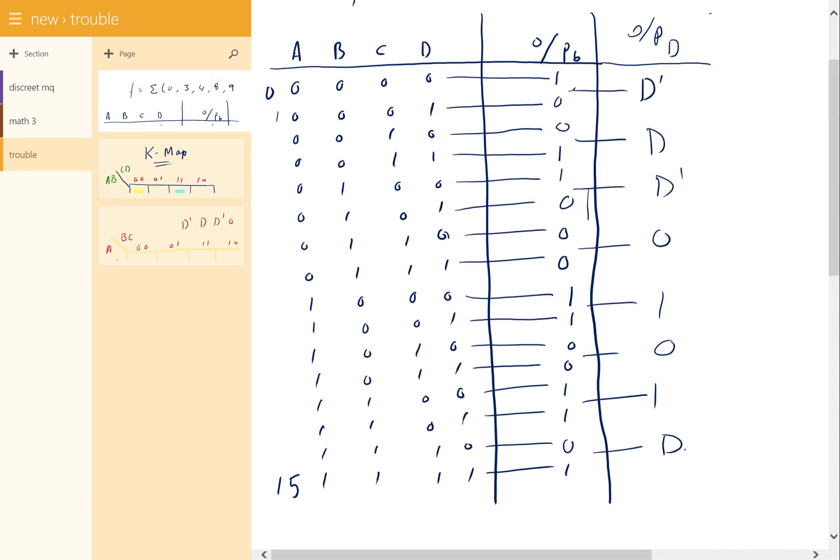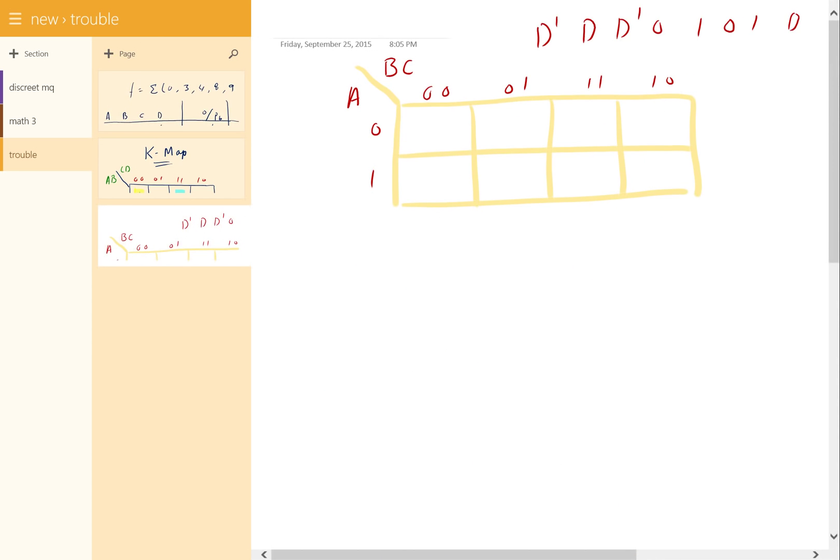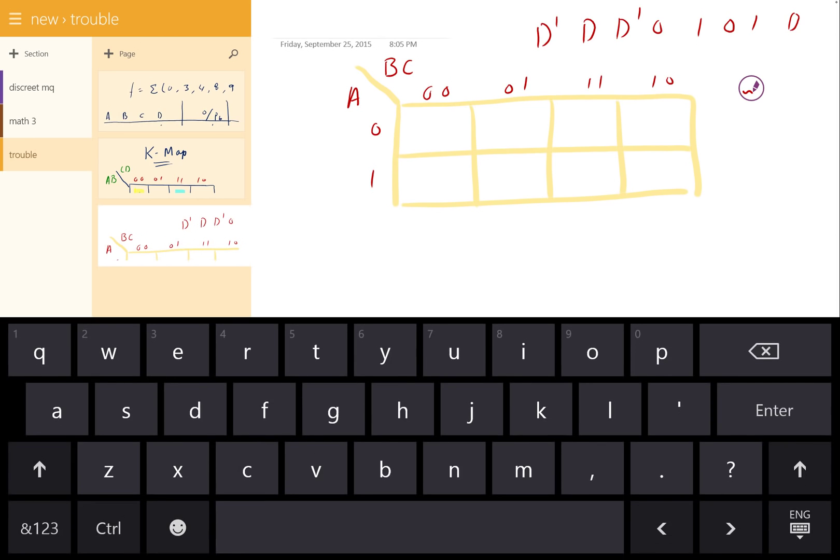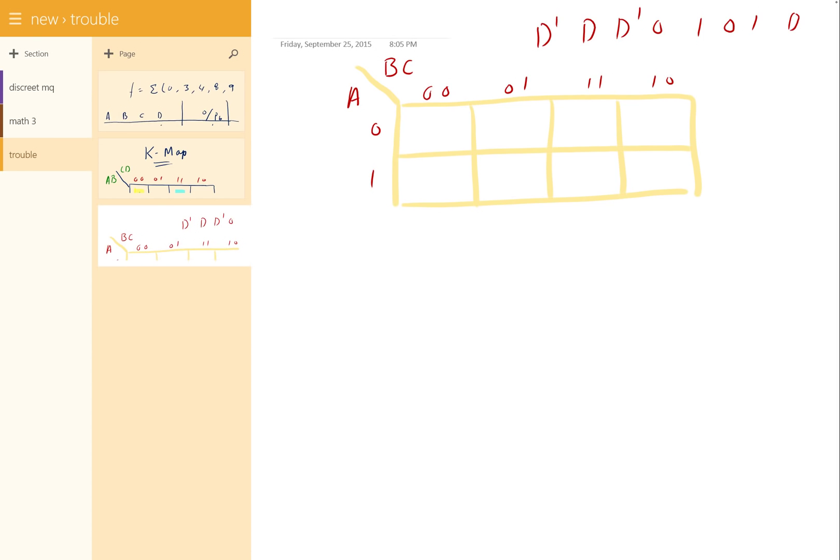Let me just check once again. Now these are the corresponding values when A, B, C equal 000, 001, 010, 011, 100, 101, 110, and 111. Correspondingly, we will plot them in the K-map. So D', D, 0, D', 1, 0, D, 1.